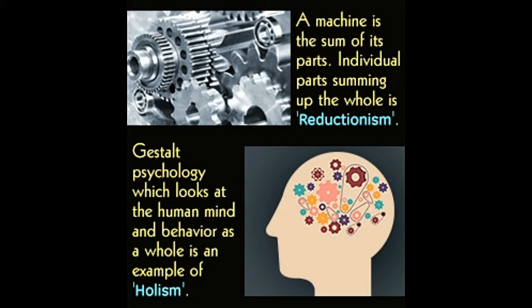On the other hand, reductionism is the complement of holism. It believes that a system or entity is a sum of its parts or components, and understanding the basic components or parts can give us an understanding of the entire system. This concept can be better understood with an analogy: a lumped electrical circuit consisting of separable elements like a resistance, capacitance, and inductance can be analyzed as a sum of its individual parts. Let us take a closer look at the meaning, examples, and comparison of these two theories.